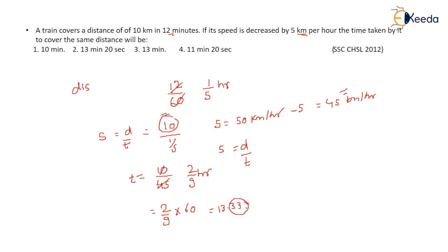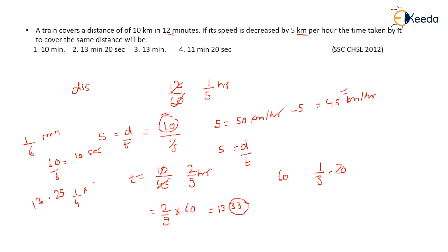Now, 33.33 minutes means 33 minutes and one-third of a minute. One-third of a minute: since 1 minute = 60 seconds, one-third = 20 seconds. Similarly, one-sixth of a minute = 60/6 = 10 seconds. If the answer were 33.25, that means one-fourth of a minute = 60/4 = 15 seconds. This is how you convert the decimal portion to seconds.